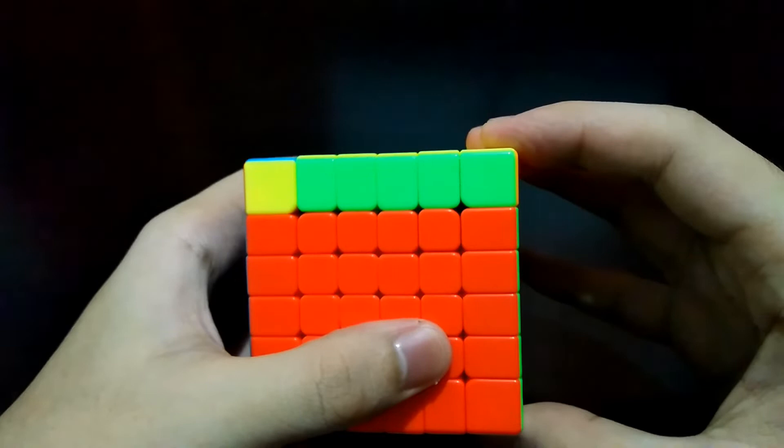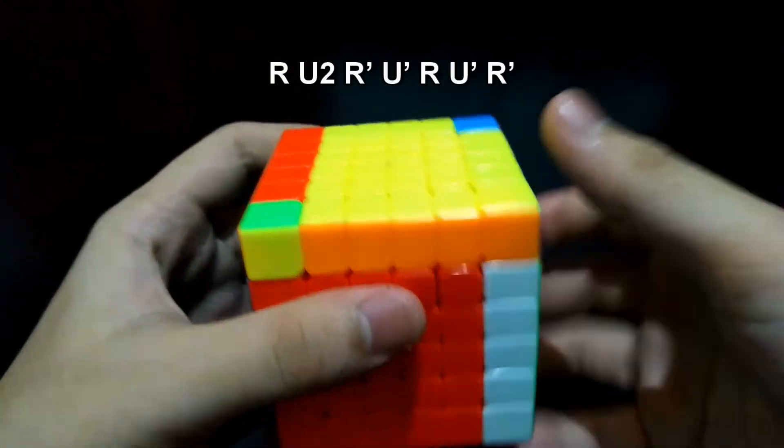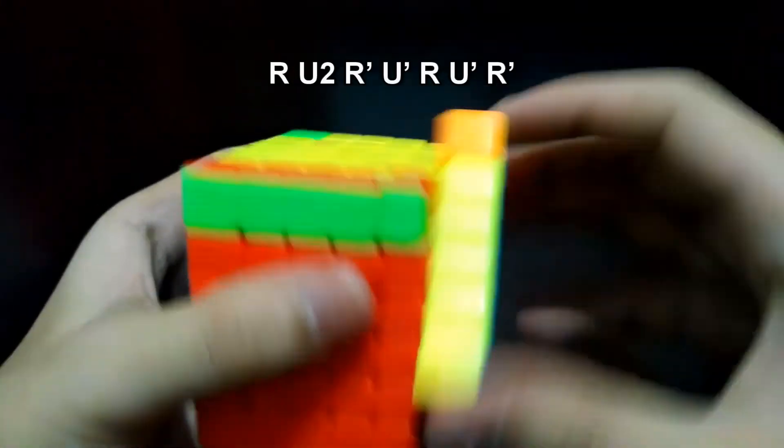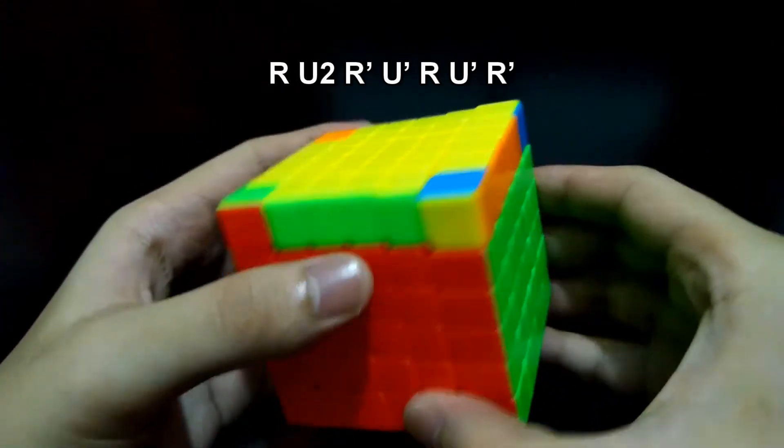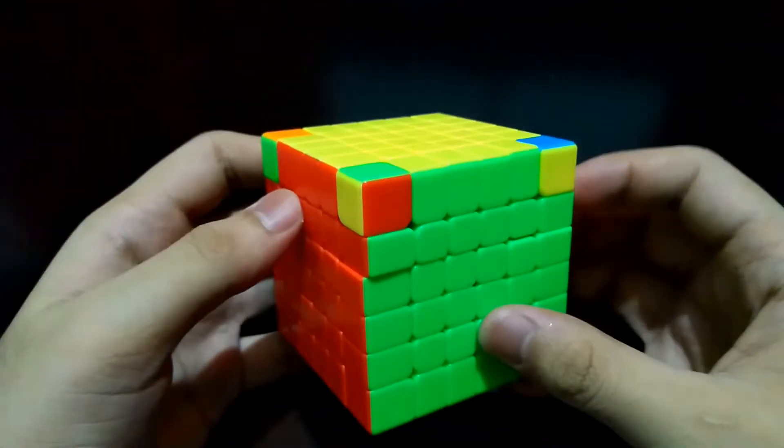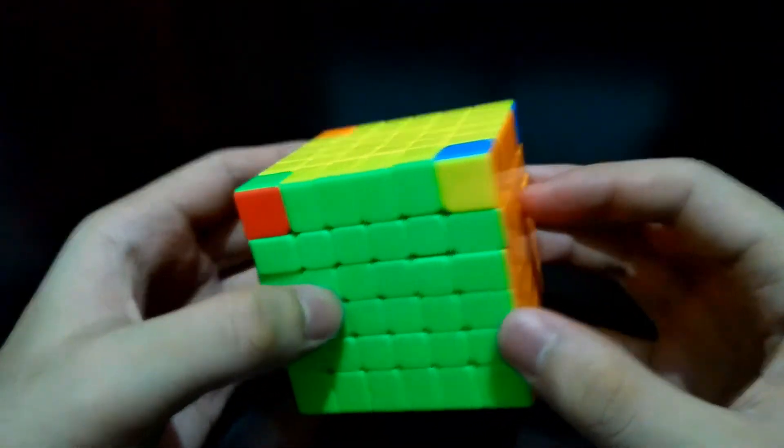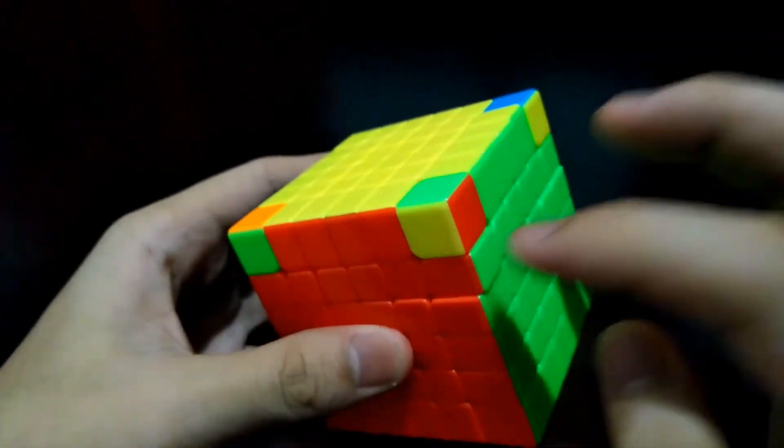Same algorithm: Right, Up 180 degrees, Right prime, Up prime, Right, Up prime, and Right prime. And the top side. One more now for placing the corners. Now we will see if it works.